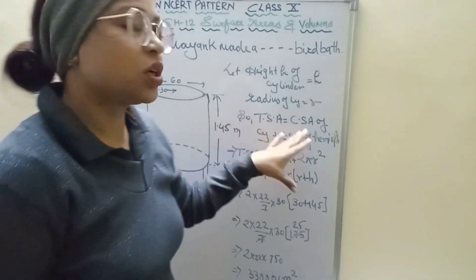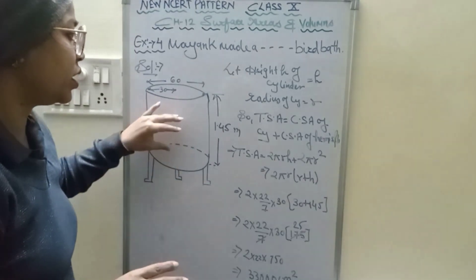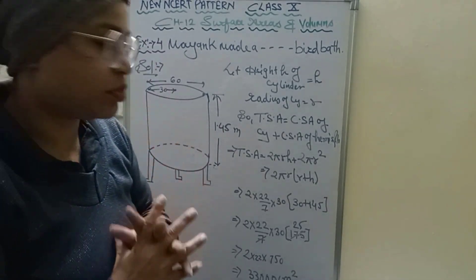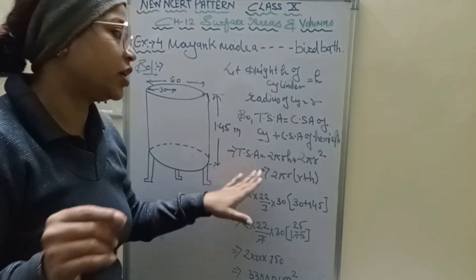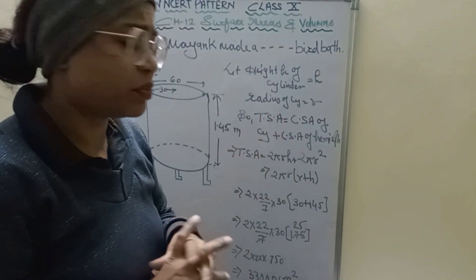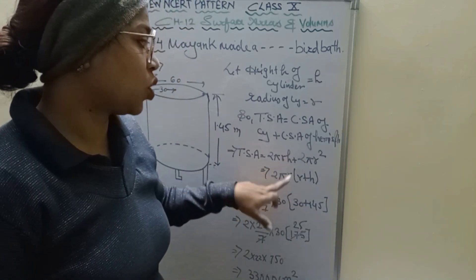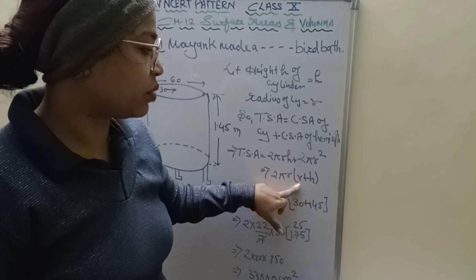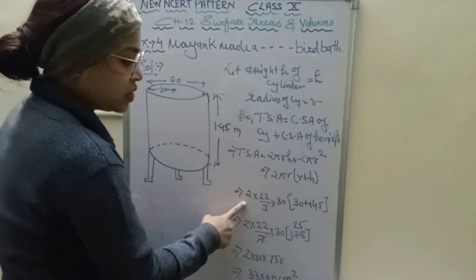So we find the total surface area. The total surface area consists of the curved surface area of the cylinder and the curved surface area of the hemisphere. The formula for curved surface area of cylinder is 2πrh, and curved surface area of hemisphere is 2πr². So 2πr is common, and in the bracket the remaining values are r plus h.